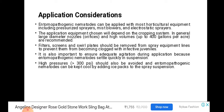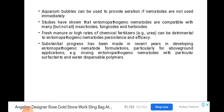EPNs can be applied with most horticultural equipment, including pressurized sprayers, mist blowers, and electrostatic sprayers. Aquarium bubblers can be used to provide aeration if nematodes are not used immediately. Fresh manure or high rates of chemical fertilizer can be detrimental to entomopathogenic nematode persistence and efficacy.